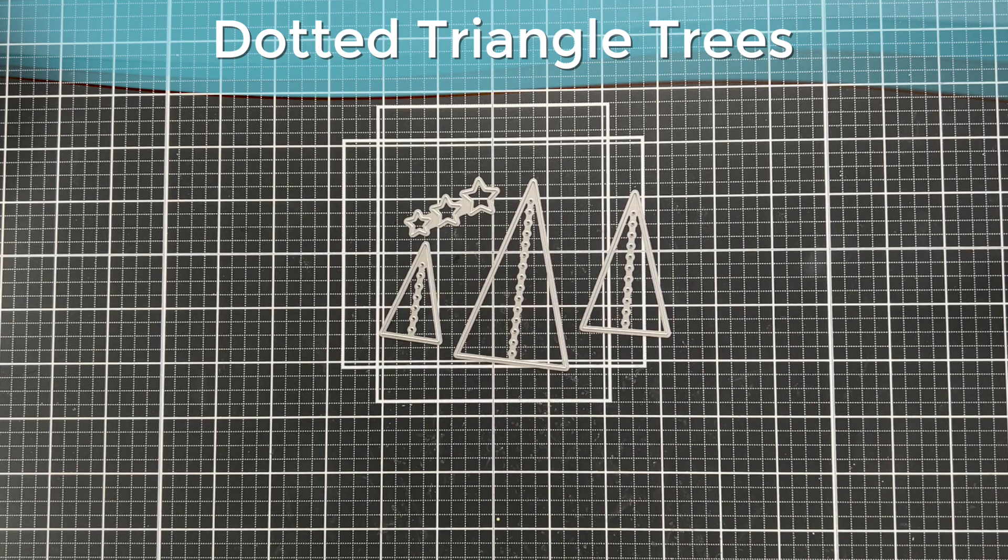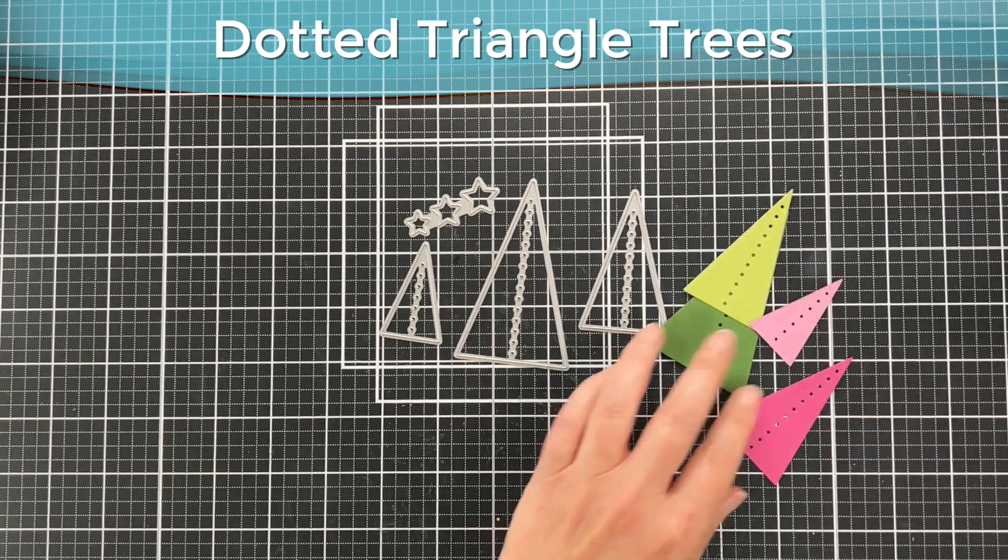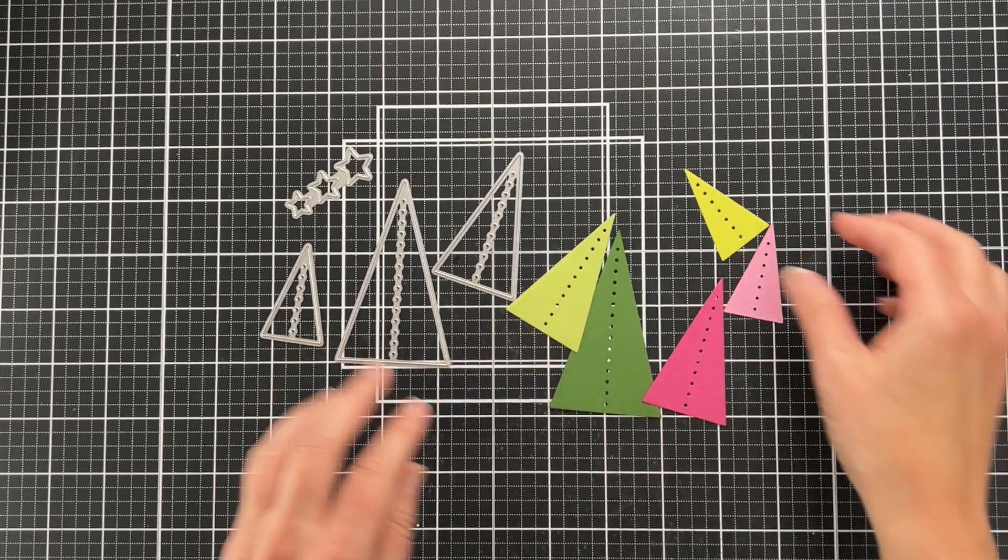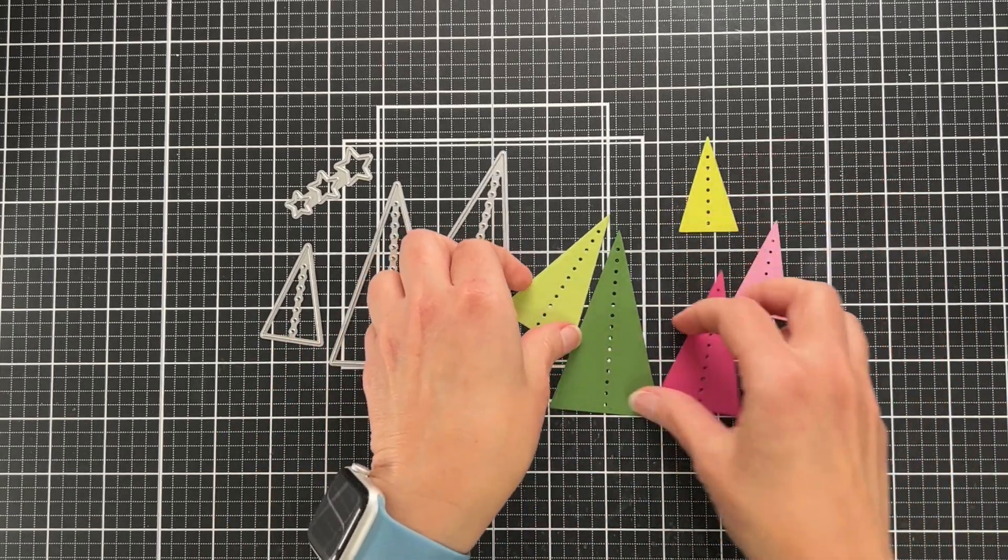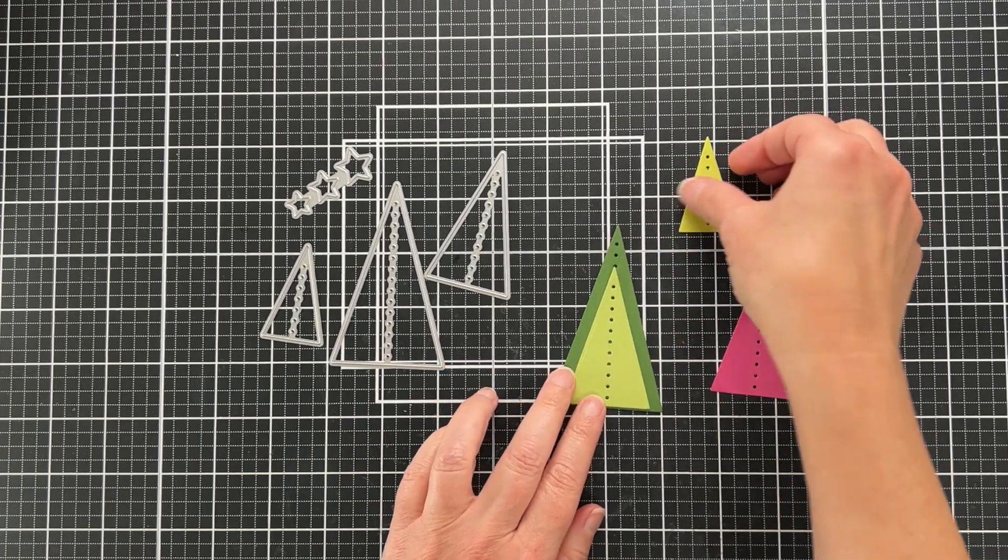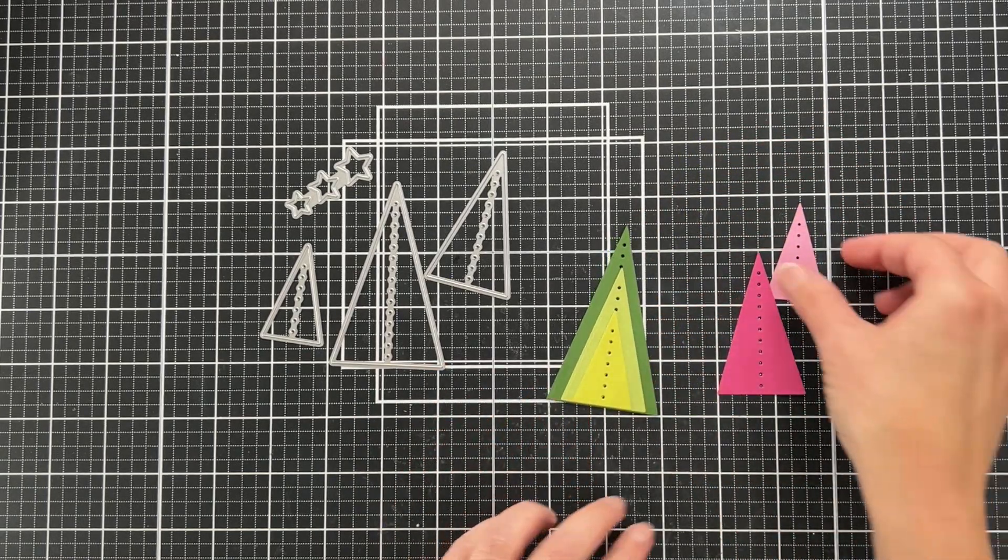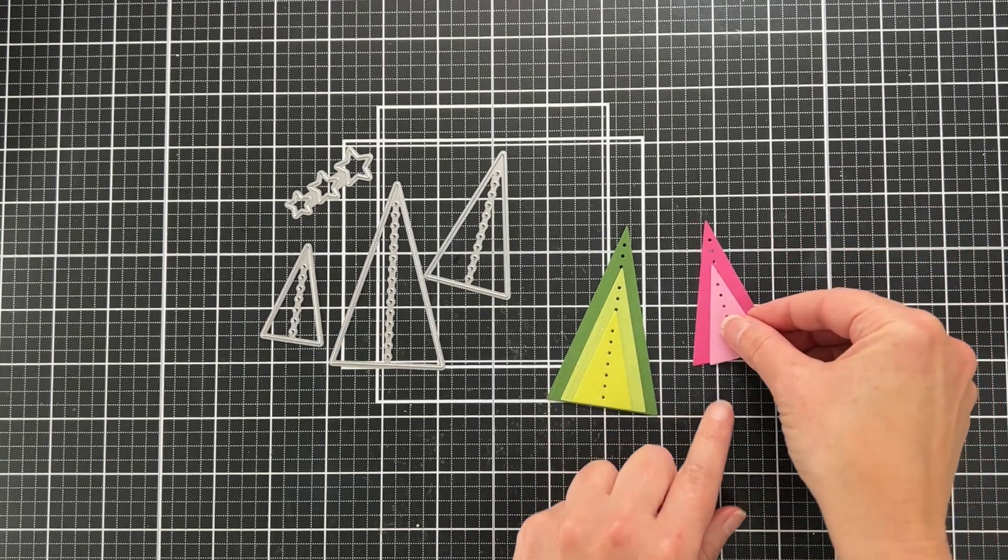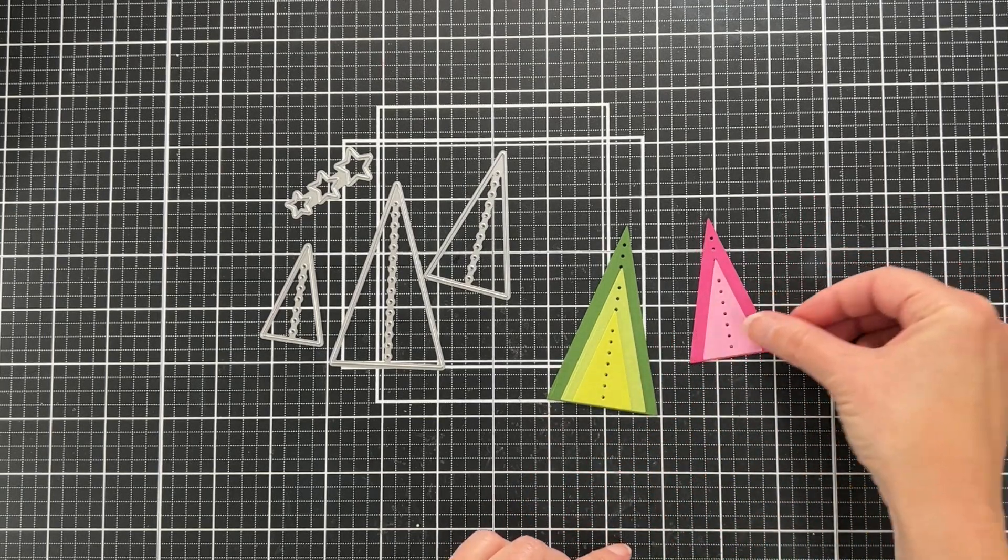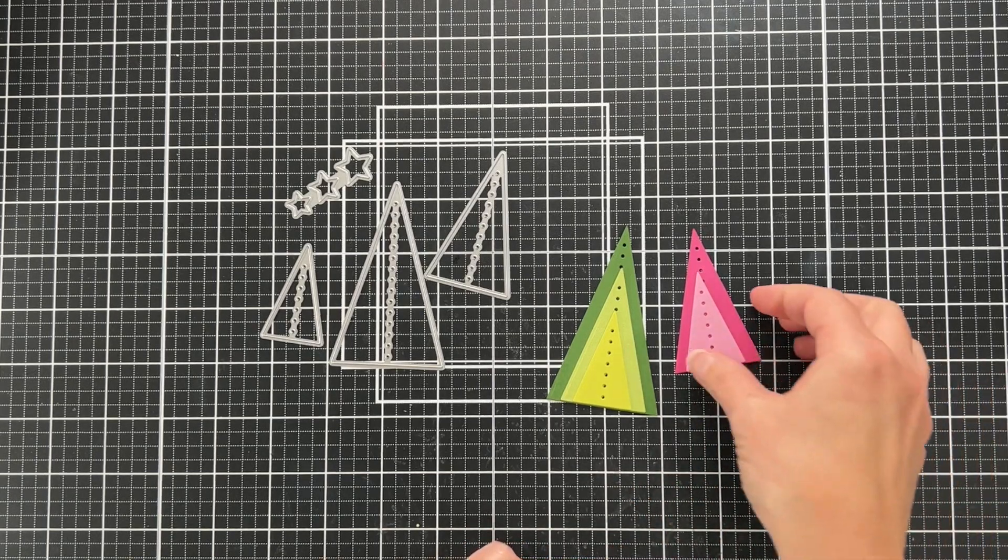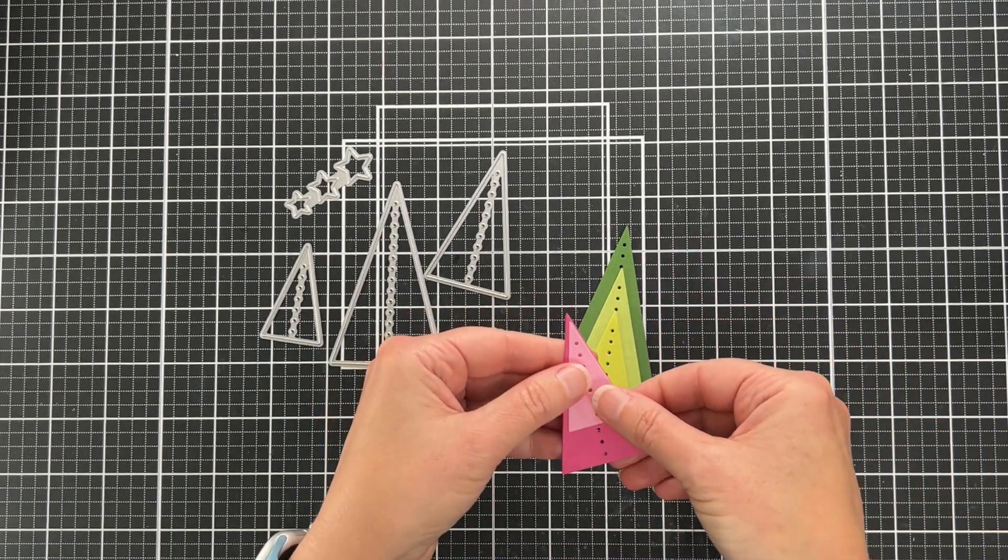The dotted triangle trees were just released this month from Waffle Flower. I've cut them out from various colors of cardstock. This is how I've seen people layering these up and then stitching them together.